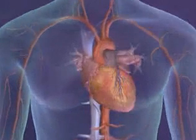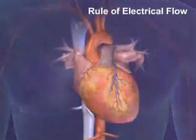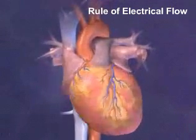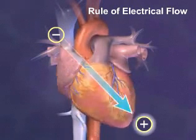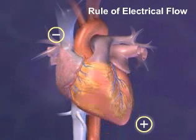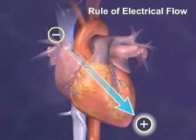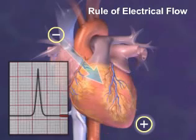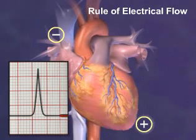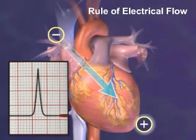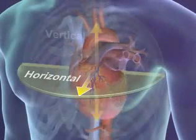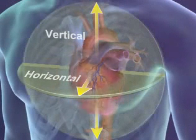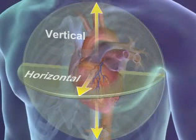Using the rule of electrical flow, we can determine how electricity is proceeding through the heart. This process relies on standardized and methodical placement of electrodes, then measuring the flow of electricity between them. We place electrodes on both horizontal and vertical planes to visualize electrical flow throughout all areas of the heart.